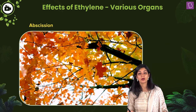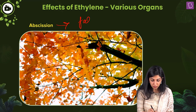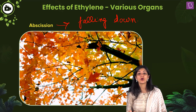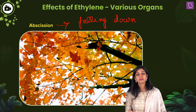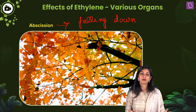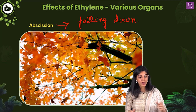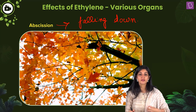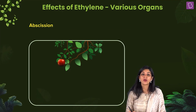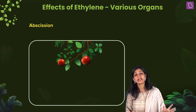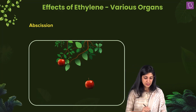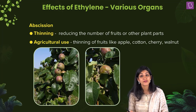Abscission is the falling down of various organs. This falling can be indicative of the completion of the life cycle or can be seasonal. So yellowing of leaves, falling of leaves, falling of flowers — that is all abscission. A fruit falling down after it is completely ripened and ready for consumption is also abscission — it is just a part of the life cycle.